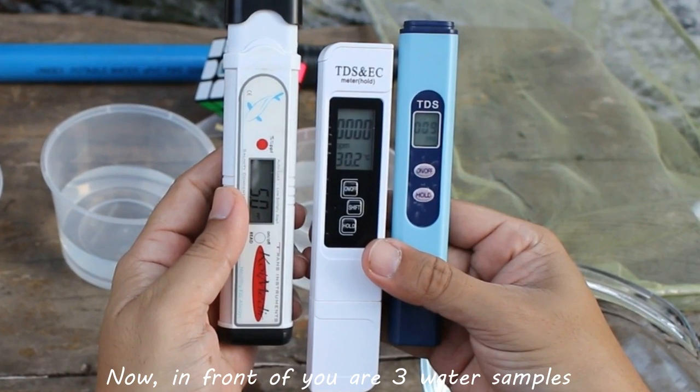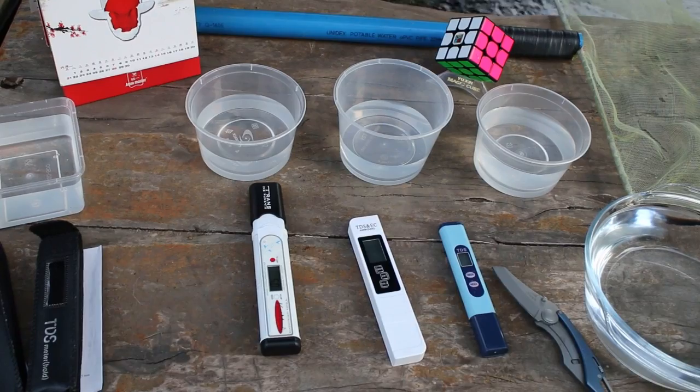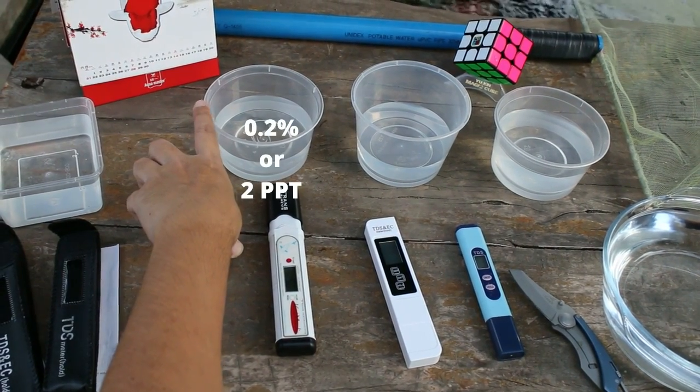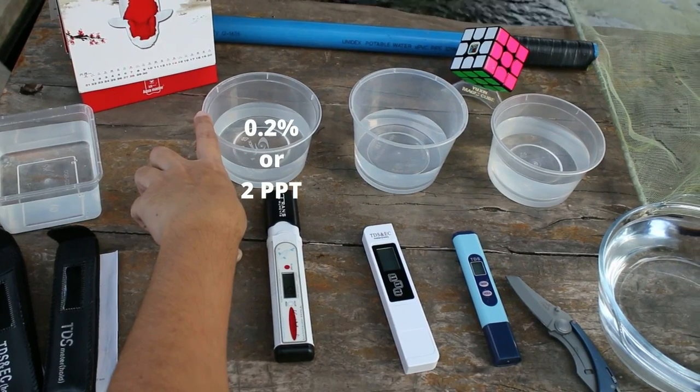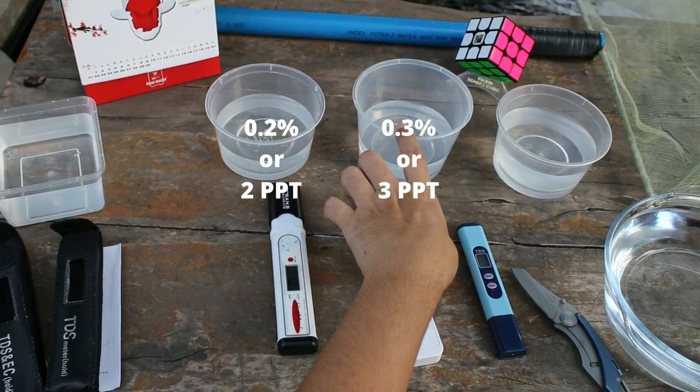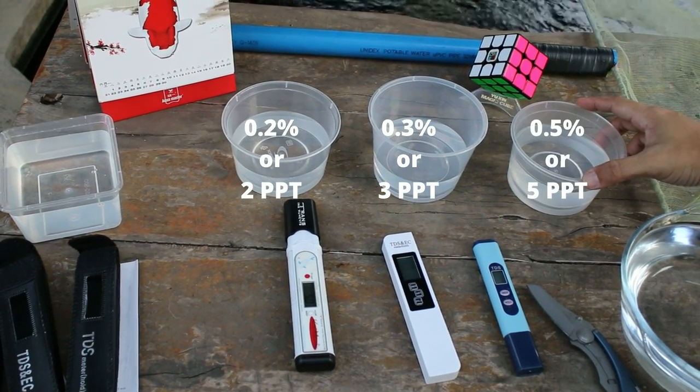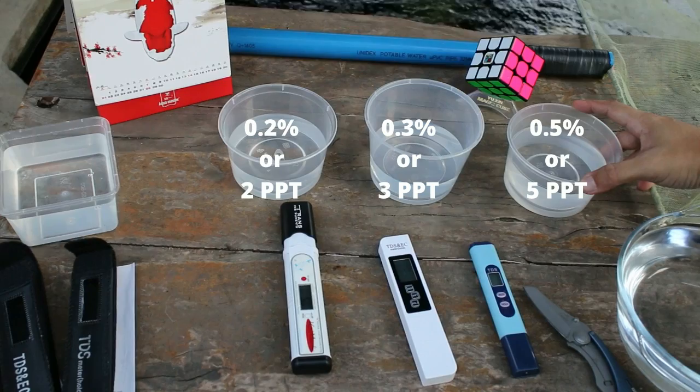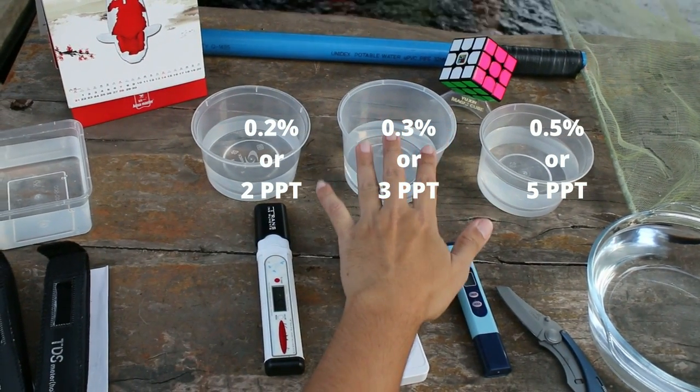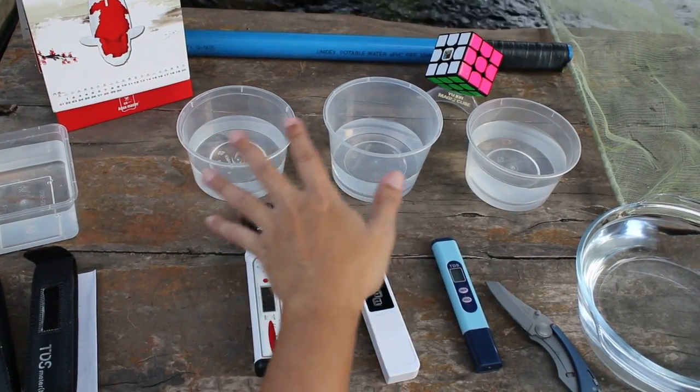In front of you are three water samples that I have prepared. The one on the left has 0.2% salinity, the one in the middle has 0.3% salinity, this one here on the far right has 0.5% water salinity. So again, 0.2, 0.3, and 0.5. We are going to measure this with each of our devices.